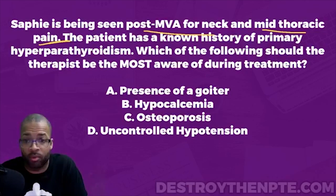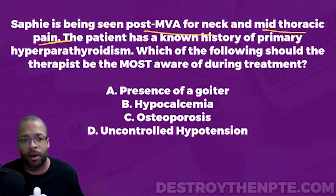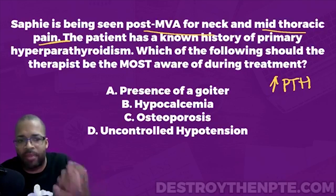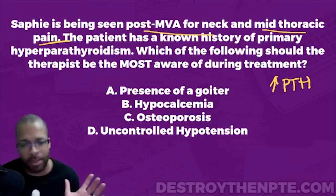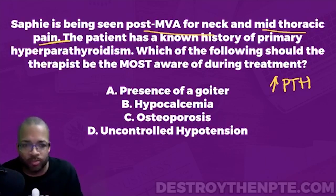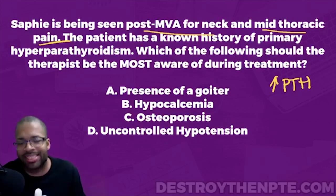The parathyroid is secreting too much of its hormone. Which one of y'all knows what hormone the parathyroid secretes? The parathyroid secretes PTH - parathyroid hormone, also known as parathyrin. With hyperparathyroidism, there is an increased level of parathyroid hormone being released. Now, what is the role of that hormone - what does it do?